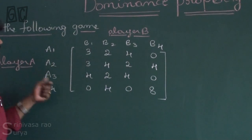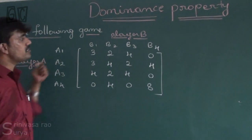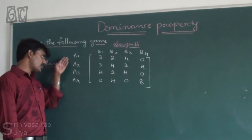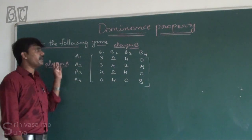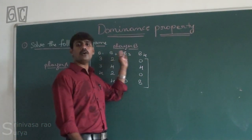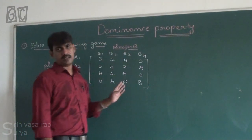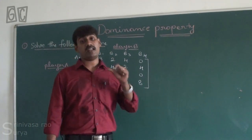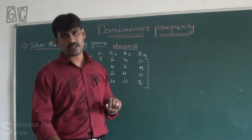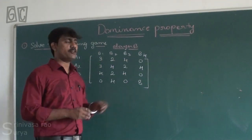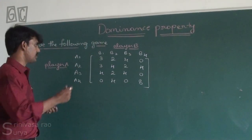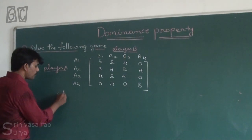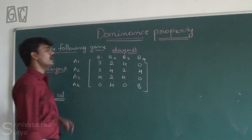We have players: player A and player B, each having four strategies. We are going to find the saddle point and the value of the game by using the dominance principle. We have a procedure for calculating the saddle point.